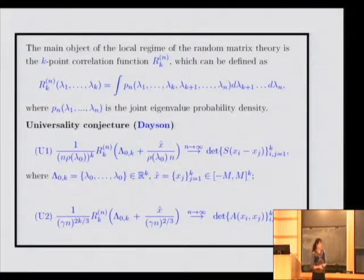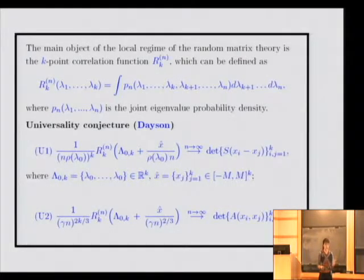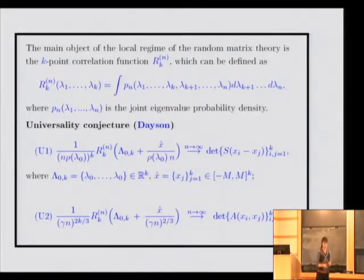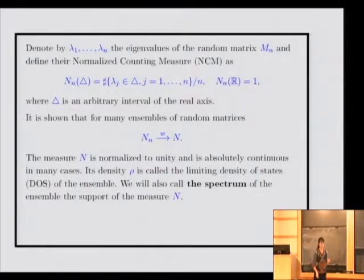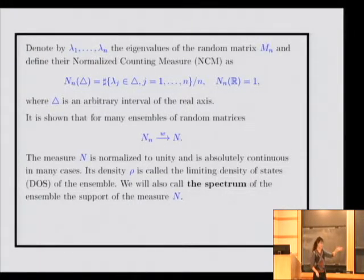The local regime of random matrix theory deals with the behavior of eigenvalues on an interval. For the random matrix ensembles that people are used to, that μ is the semicircle law, which gives you the Dyson and the Wigner distribution. For the Wigner distribution, we obtain, of course, the semicircle law.